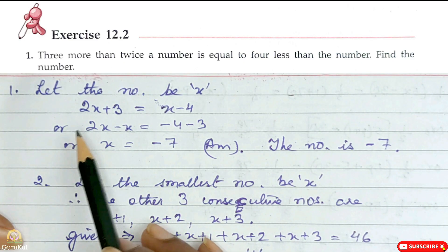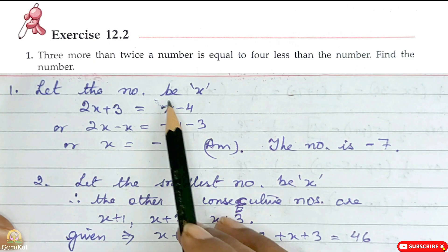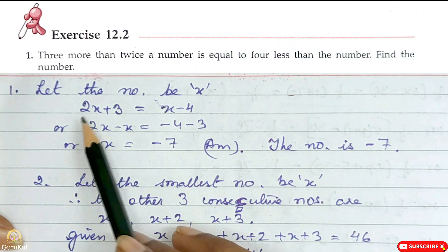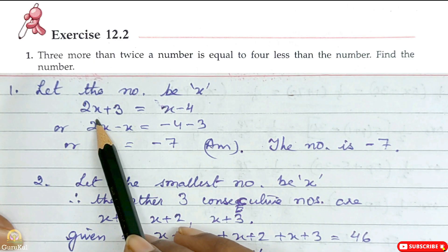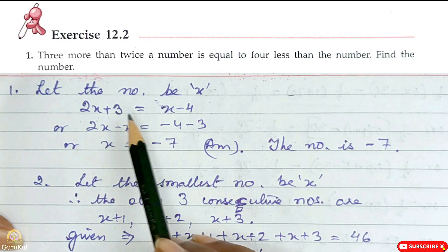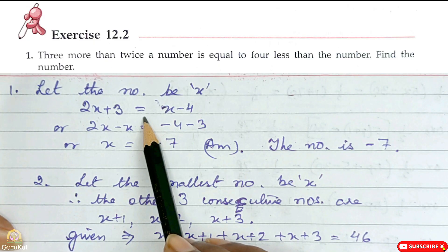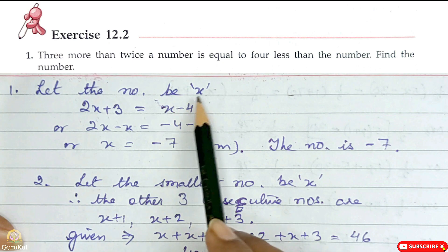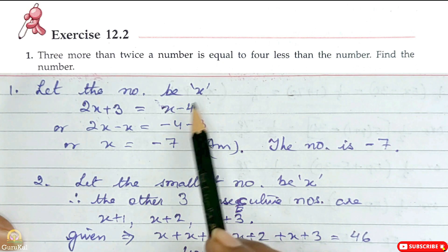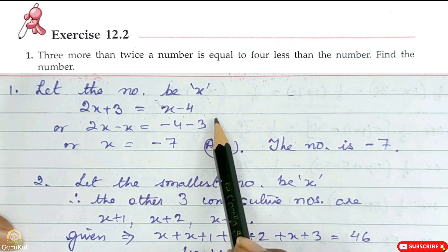3 more than twice a number: the number is x, so twice a number means 2x, and 3 more means plus 3. Is equal to 4 less than the number — the number is x, so x minus 4. That gives us our equation.